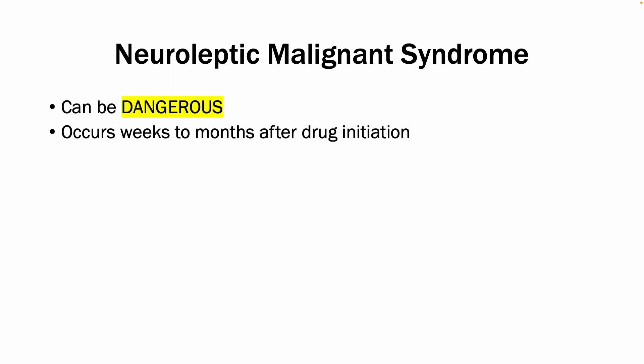Lastly and most importantly is neuroleptic malignant syndrome. It can be very dangerous and occurs weeks to months after drug initiation. Excessive D2 receptor blocking in the hypothalamus, the nigrostriatal pathway, and the spinal cord is the mechanism behind NMS. The antipsychotics cause calcium release in the peripheral muscles, which increases contractility.